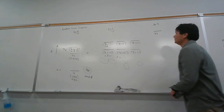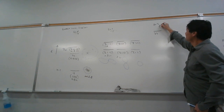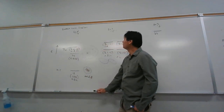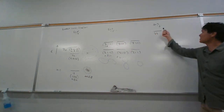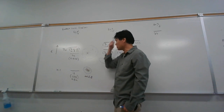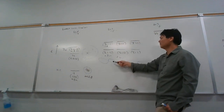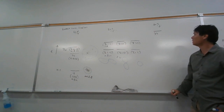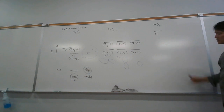We're also allowed l equals 2. L equals 0 is s, l equals 1 is p, and l equals 2 is d. The letters have meaning from spectroscopy: s comes from the sharp line, p from the principal band, and d from diffuse. F is the next one, and after that they go alphabetical.